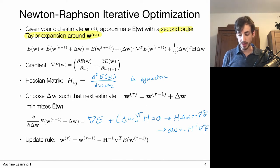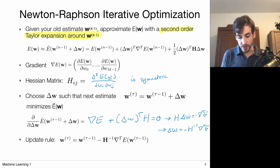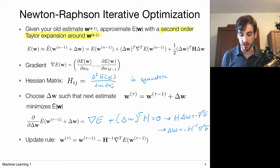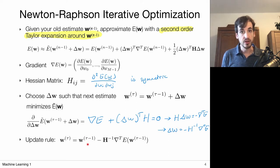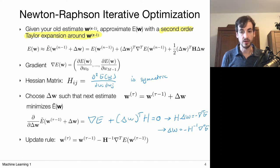As a dimensionality check: in our convention the gradient is a row vector, so taking the transpose gives a column vector. The Hessian inverse times that vector yields a new vector, so the update step is again a vector — consistent with w being a vector. The new weight vector is then the previous weight vector plus this step: minus the inverse Hessian times the gradient transpose of the error.